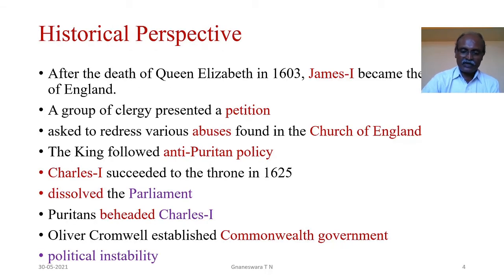Historical Perspective: After the death of Queen Elizabeth in 1603, James I became the King of England. A group of clergy met him and presented a petition in which he was asked to redress various abuses found in the Church of England. The king feared that granting more rights to Puritans would be dangerous to him, so he followed an anti-Puritan policy. His son Charles I succeeded to the throne in 1625 and proved to be a dictator who dissolved the Parliament.